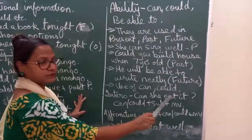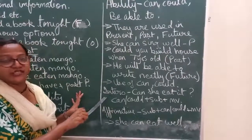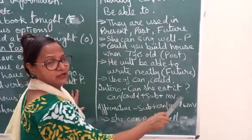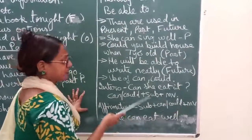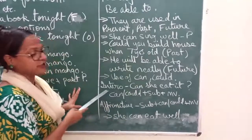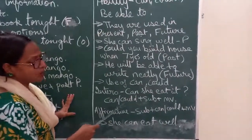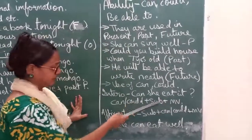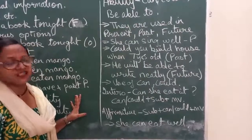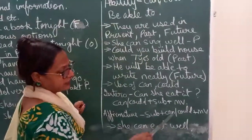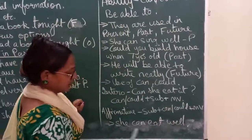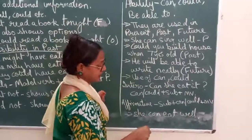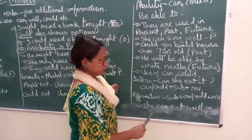Can and could are also used for interrogative and affirmative sentences. For interrogative: the formula is can/could + subject + main verb — for example, 'Can she eat it?' Starting the sentence with can shows the interrogative form. For affirmative sentences: the formula is subject + can/could + main verb — for example, 'She can eat well', where she is your subject, can is the modal, and eat is the main verb.